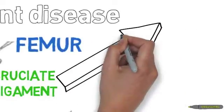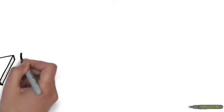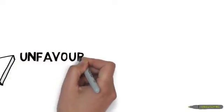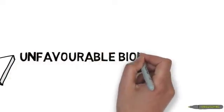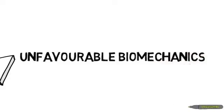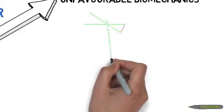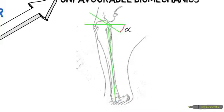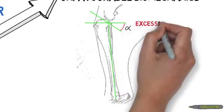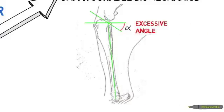So what causes the cruciate ligament to be diseased? Essentially there are two issues. The first is that there is unfavorable biomechanics in the joint. What does this mean? Basically, the tibial plateau or surface where the femur sits is tilted backwards. This is represented by the angle alpha. This means that every time the animal bears weight on the leg, the cruciate ligament is under strain.